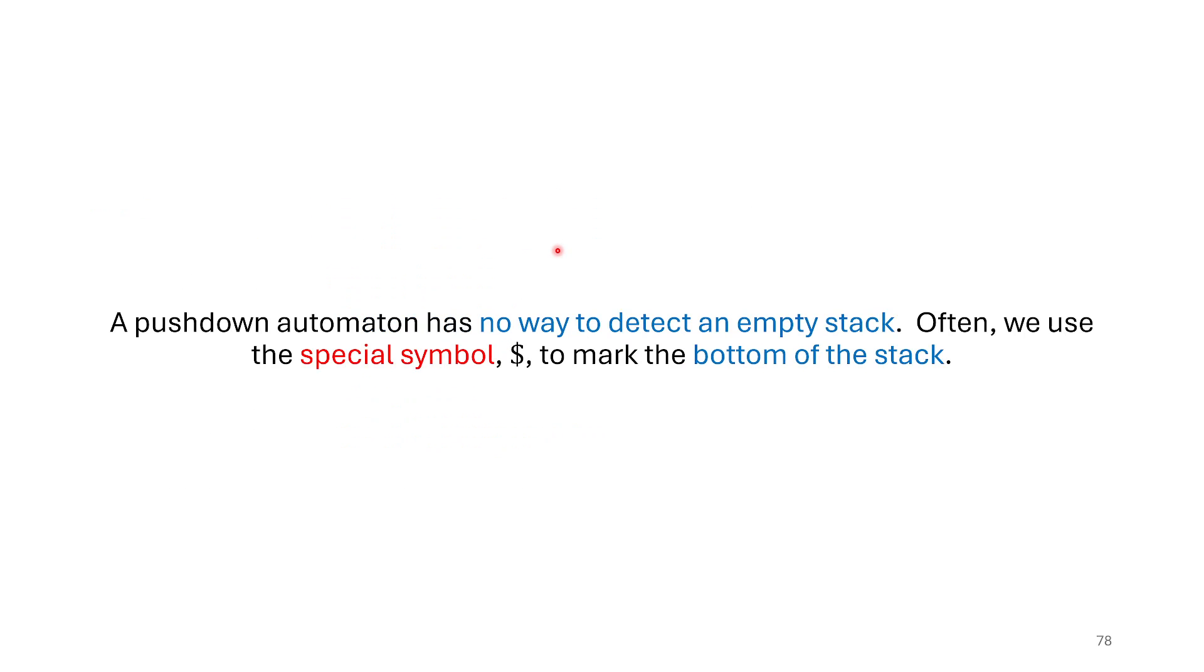I've already kind of mentioned this implicitly that a pushdown automata, at least the variant that we've just introduced, does not have a way to detect an empty stack. So what that means is when it gets down to the bottom of the stack, there's no signal that the stack gives to the automata that says yes, you're at the bottom. That's why it's a design pattern usually to use a special symbol, dollar sign.